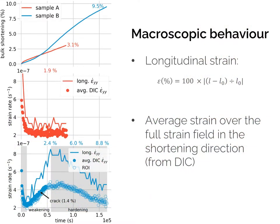As a reference, I illustrate here the macroscopic creep curves for both samples, showing two types of data based on the longitudinal strain and on the average strain estimated over the entire deformation field in the shortening direction. In both cases, the strain rates fall off rapidly to a value of around 2×10⁻⁷. In sample A, it reached a steady state until the end of the experiment at a shortening of 3.1%. In sample B, the strain rate increases monotonically, reaching a peak strain rate at a bulk shortening of 2.9%, then decreasing gradually until the end of the experiment at 9.5%, so that after the initial decrease, sample B went through a weakening and then a hardening stage, which is otherwise a common behavior in ice.